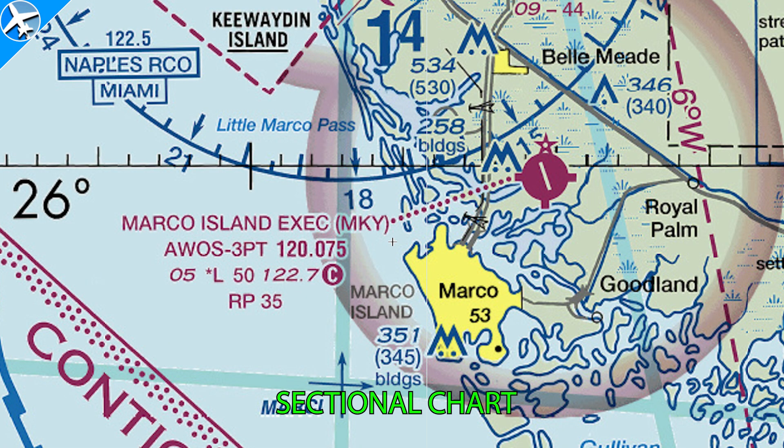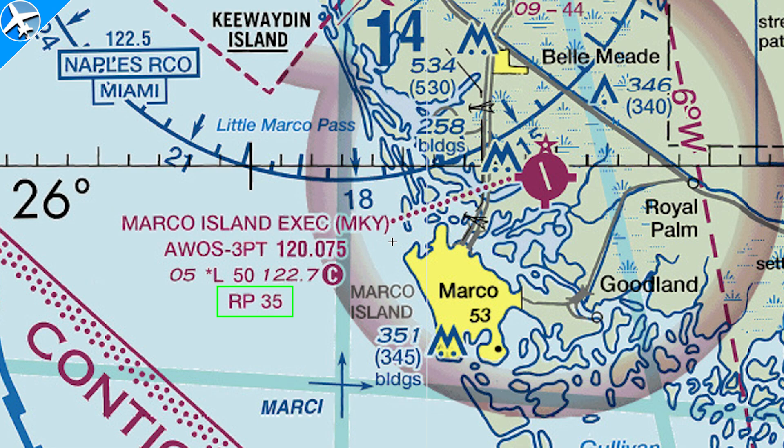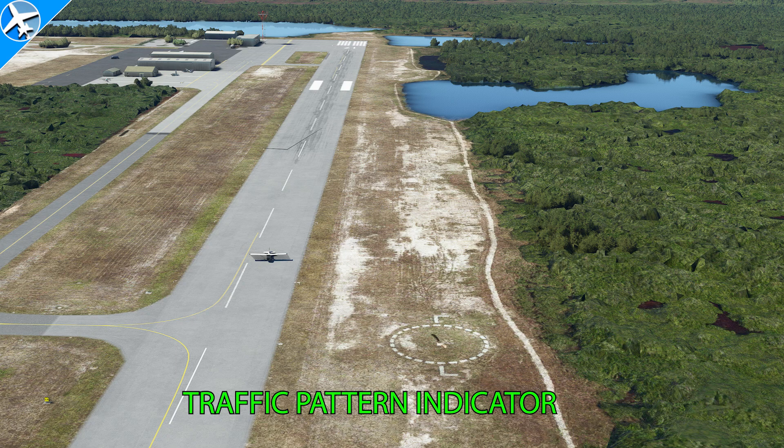Another source and a much easier way to figure out left or right-hand traffic pattern is a sectional chart. Marco Island Airport is used in this example. At the bottom you can see RP35, which means right pattern, runway 35. And if all available sources of information, including the first two examples, were missed, there's a traffic pattern indicator at some airports. Right now we're looking down runway 35, and the traffic pattern indicator indicates a right-hand pattern.